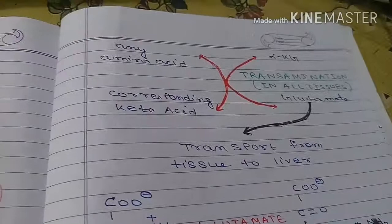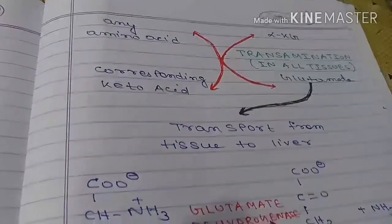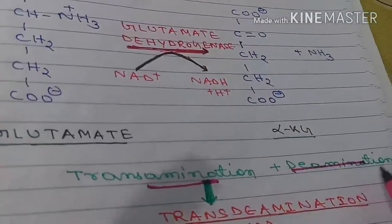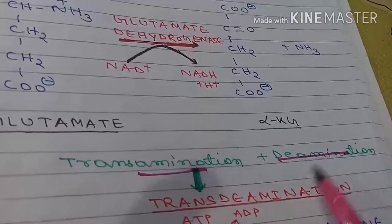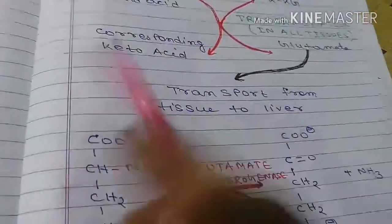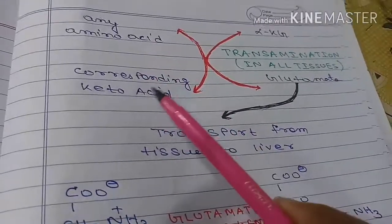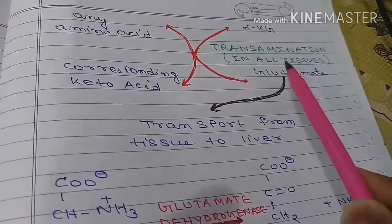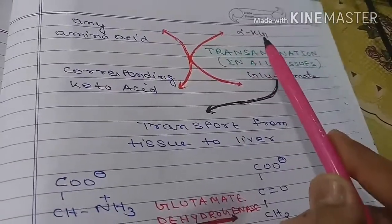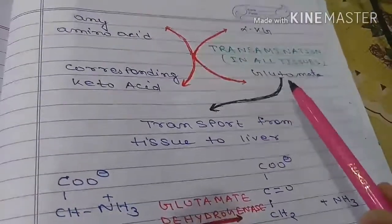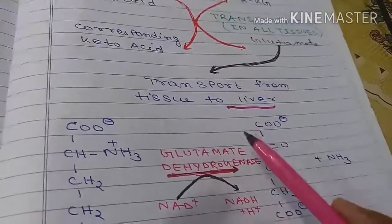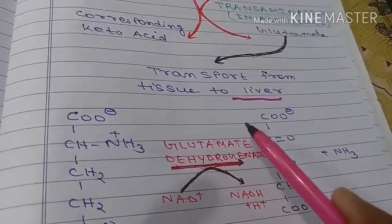The next part is trans-deamination. Trans-deamination involves transamination plus deamination — these two together are termed trans-deamination. As discussed, during transamination, any amino acid transfers its amino group to alpha-ketoglutarate to form glutamate. This transamination occurs in all tissues, where alpha-ketoglutarate accepts ammonia to form glutamate, and this glutamate is then transported from tissues to the liver.